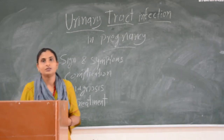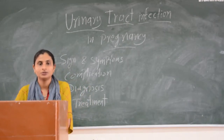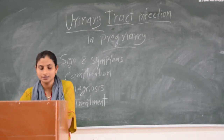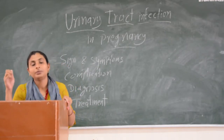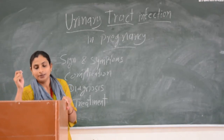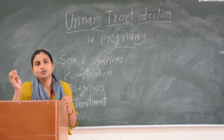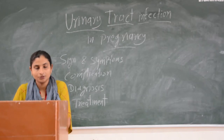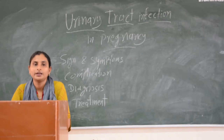With pyelonephritis, the local population may also be affected. Symptoms include anorexia, nausea, vomiting, dysuria, frequency of micturition, uterine contractions, and tachycardia.